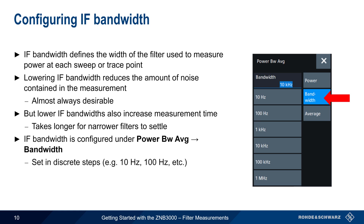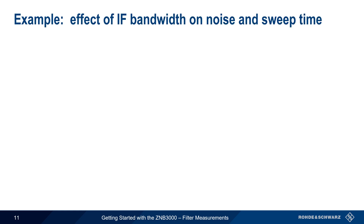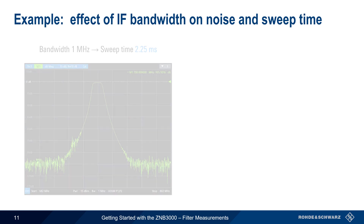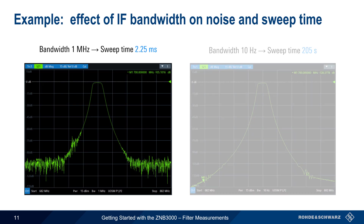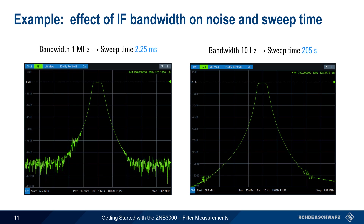Note that bandwidth can only be set in discrete steps, for example 10 Hz, 100 Hz, 1 kHz, etc. In this example, a measurement was made with a relatively high IF bandwidth of 1 MHz, and thus has a very fast sweep time of only 2.25 milliseconds. If IF bandwidth is decreased to only 10 Hz, the sweep time becomes much larger — over 200 seconds. But the noise in the stopbands has been reduced by approximately 25 dB, allowing a much more accurate measurement of the stopband attenuation or rejection provided by this filter.